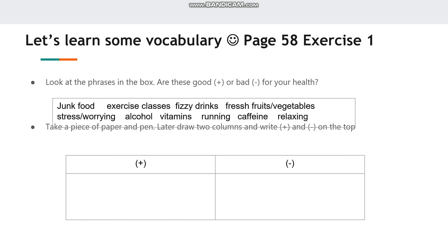Now let's learn some vocabulary related to our topic. You can see some phrases in the box. Take a piece of paper and pen and draw two columns, writing plus and minus at the top, just like this. Now stop the video and write down the phrases in the correct column.